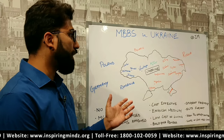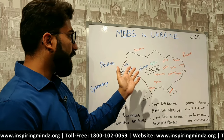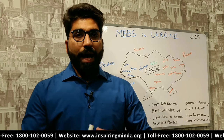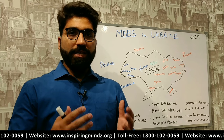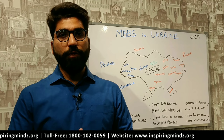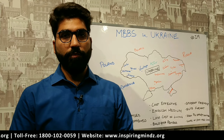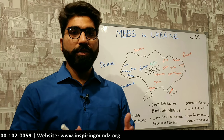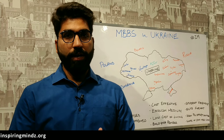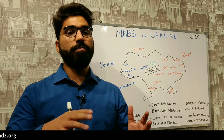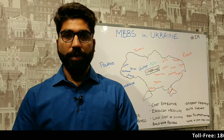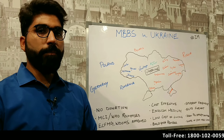Ukraine, as you can see, is surrounded by Russia, Belarus, Poland, and Romania as the major countries. The capital of Ukraine is Kyiv, and the population is around 44 to 45 million people. The president of Ukraine is the newly elected Zelensky. The currency of Ukraine is the Hryvnia — 1 Hryvnia is equal to around 2.4 to 2.5 Indian rupees as of now.